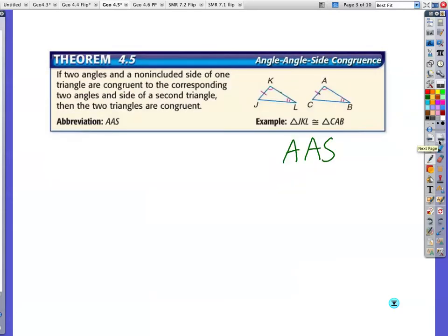Angle-Angle-Side means I go angle, I don't know about the side in between, then I find another angle, and the very next side is going to be congruent. So I go angle, then right away to another angle, and the very next side has to be congruent. Angle-Angle-Side. Take a moment, make sure you've got a picture down for that.